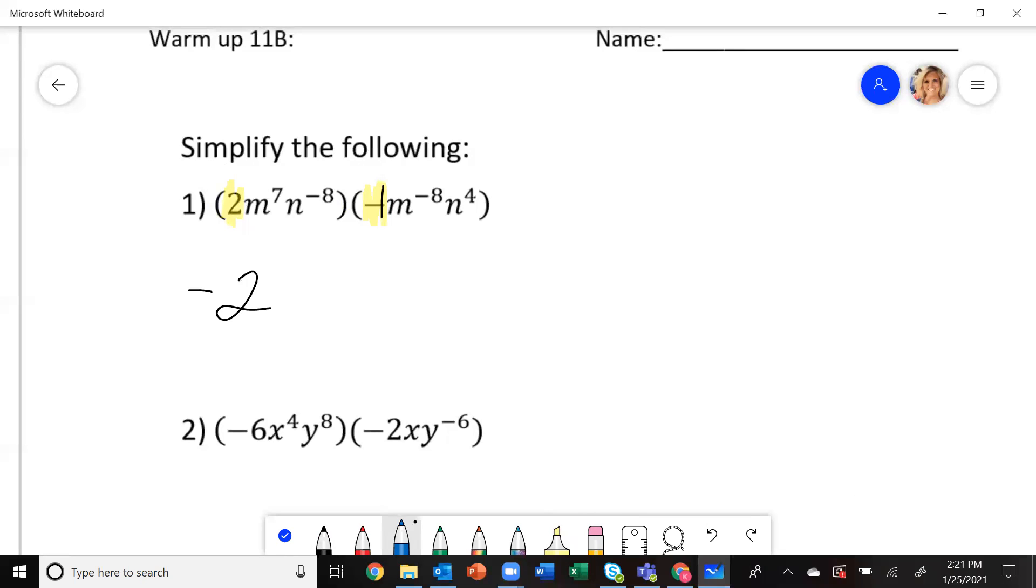When you are multiplying the bases, you are going to add the exponents. So with the m's, I'm going to add seven plus negative eight. That's going to give me m to the negative one.